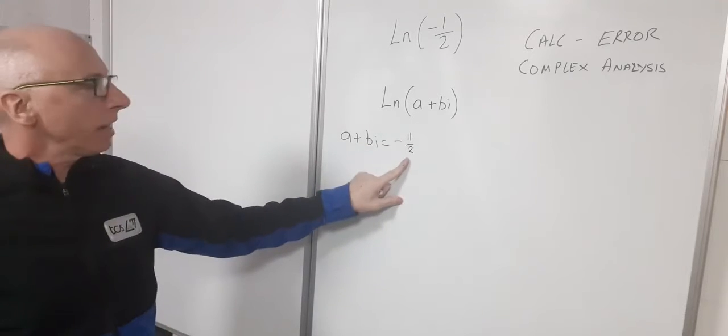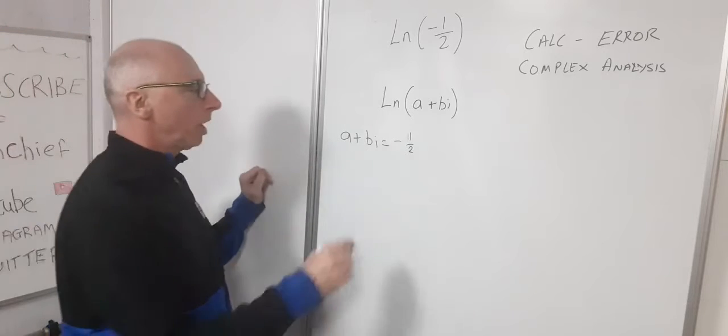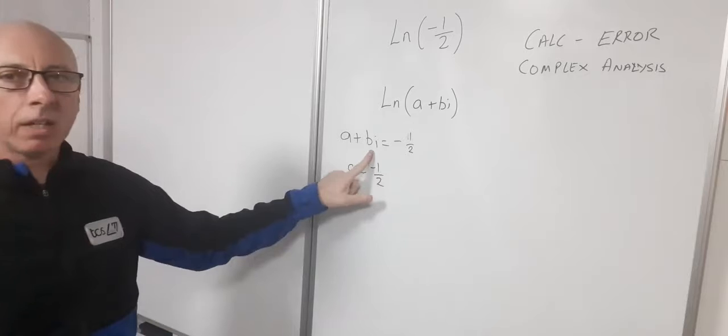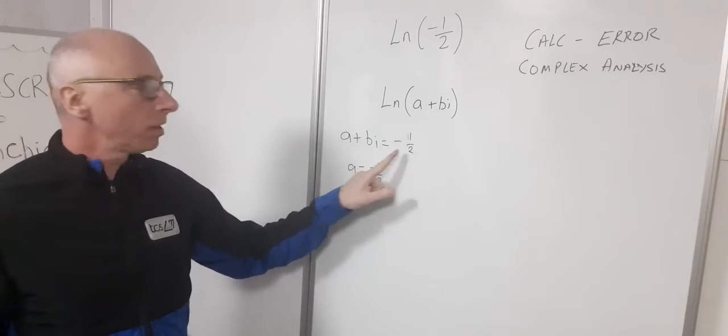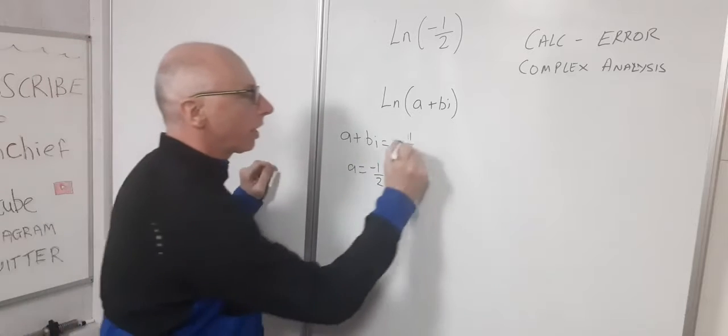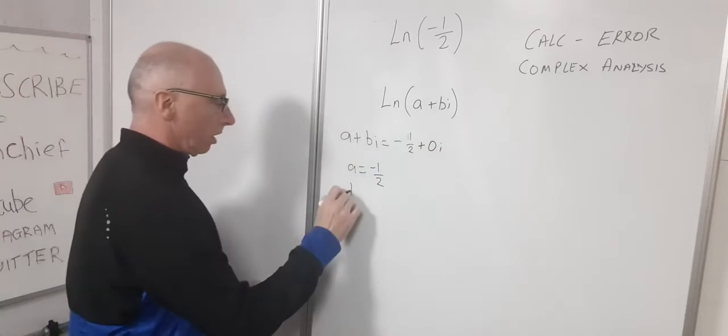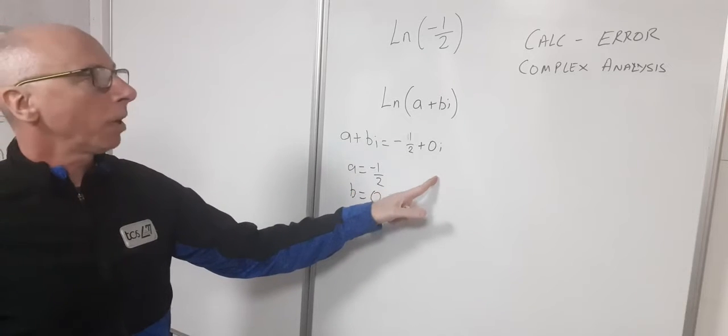Here my a, as minus one-half is a real number, the a corresponds to the real number. So a equals minus one-half and b evaluates to the imaginary part of this number, which case I could write here plus zero i. So my b is zero. That's how my complex number is made up.